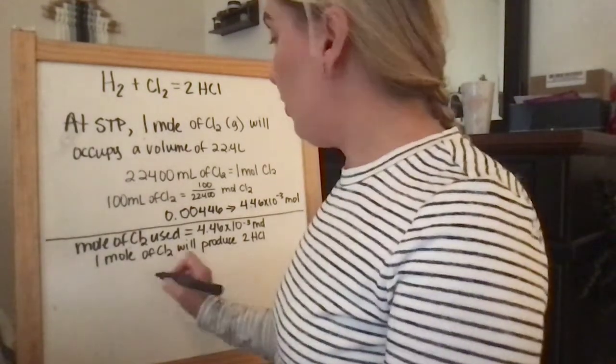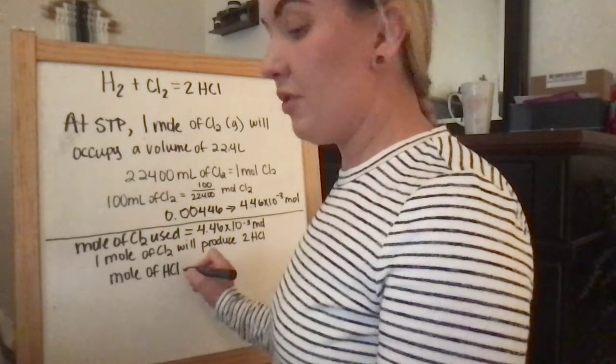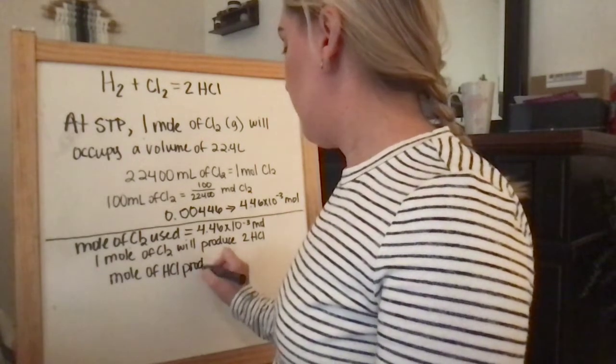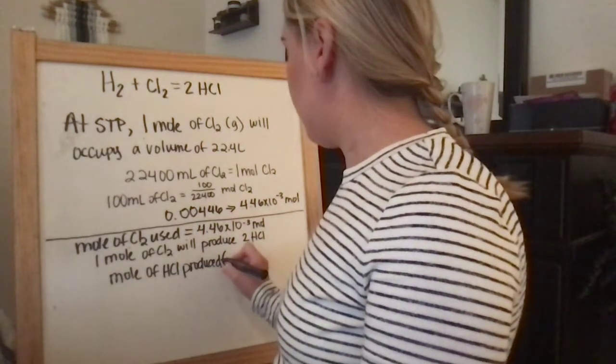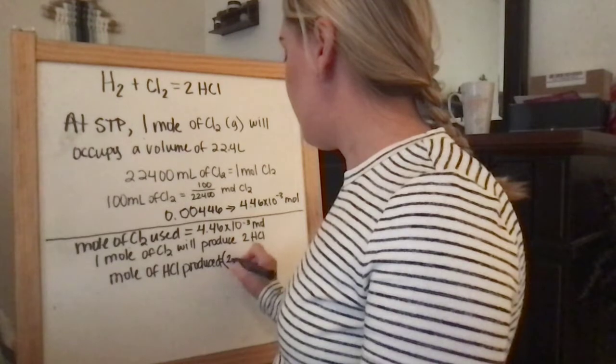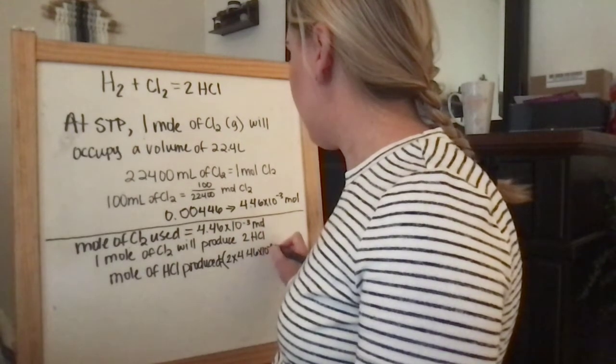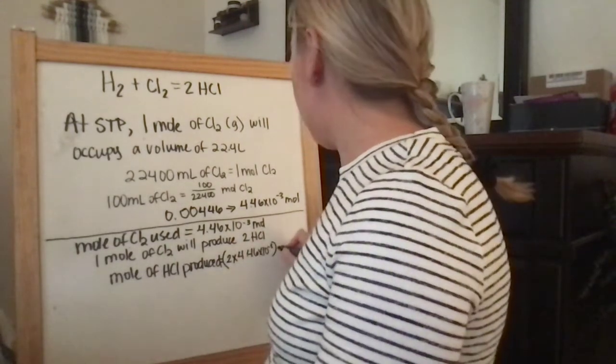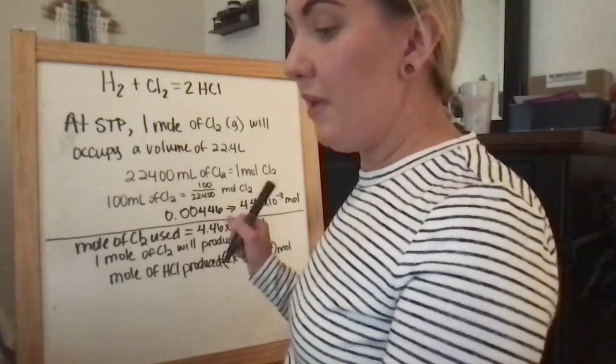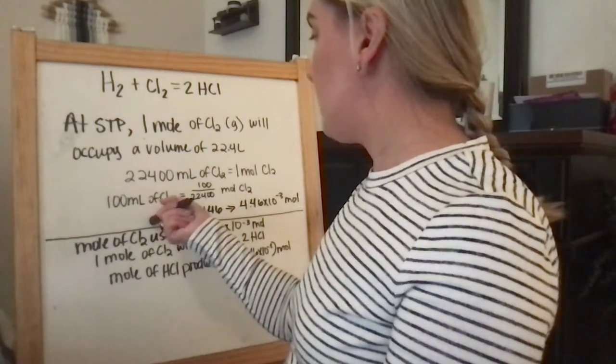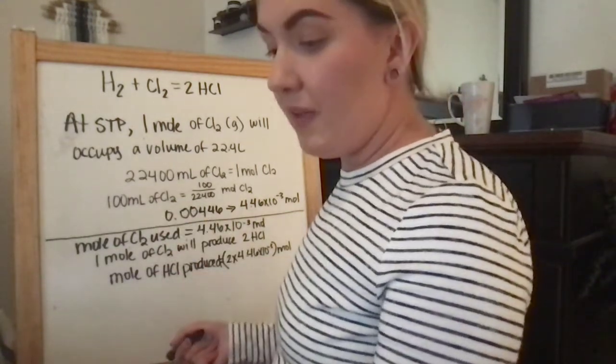So 1 mole of Cl2 will produce 2 moles of HCl, and the coefficients of a balanced chemical equation will be used to generate these mole ratios. So the mole of HCl hydrochloric acid produced will equal 2 times 4.46 times 10 to the negative 3rd. And that's the mole. So now we know how many moles of Cl2 is being used and how many moles of HCl is being produced.